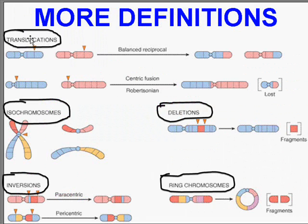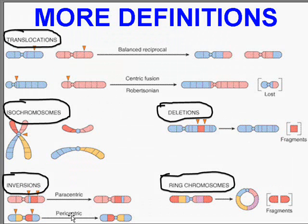Here's an example of a translocation in which you have one part being translocated onto another chromosome. Here you have an isochromosome that breaks up in the wrong plane. Here you have a deletion in which a segment of a chromosome gets lost. Here you have an inversion in which part of the chromosome flips over — it could either be paracentric or pericentric. And here you have a ring chromosome. All of these things are not only possible, but we see them in many diseases and also in tumors.